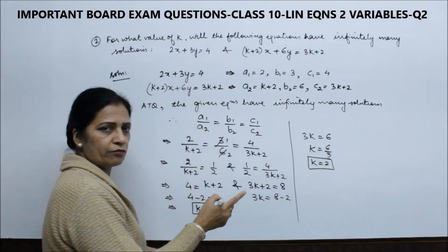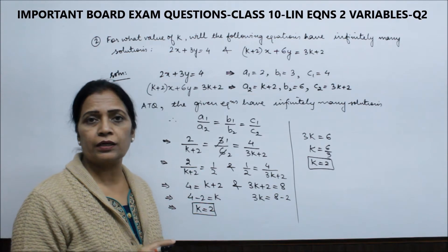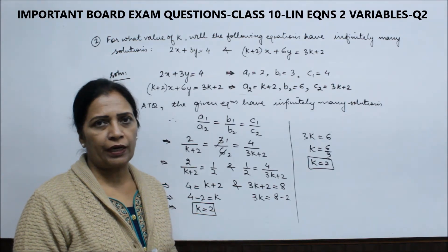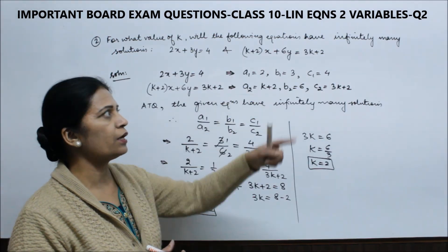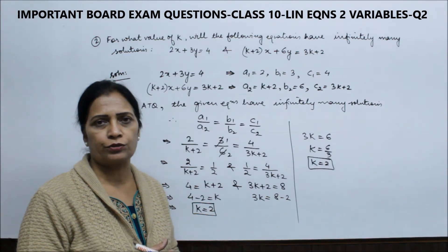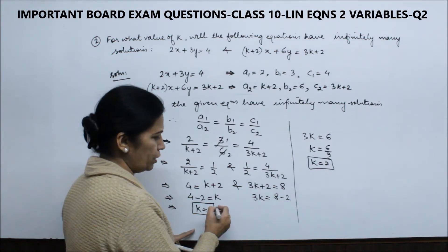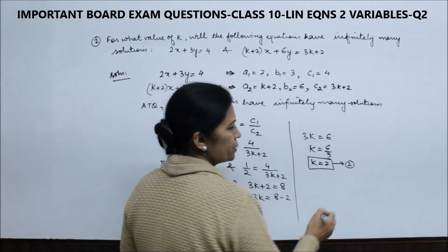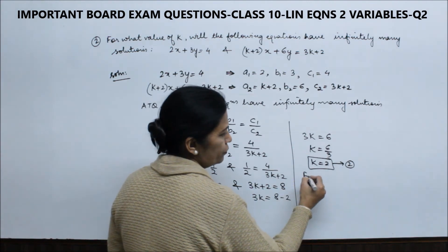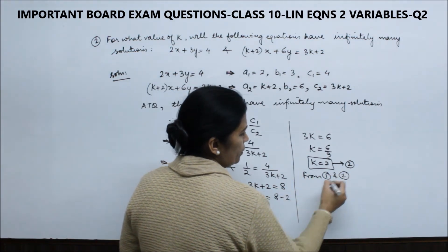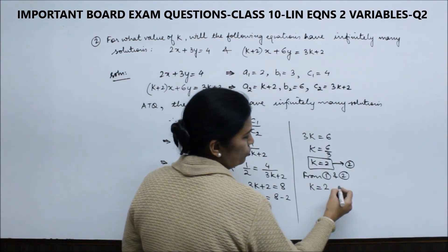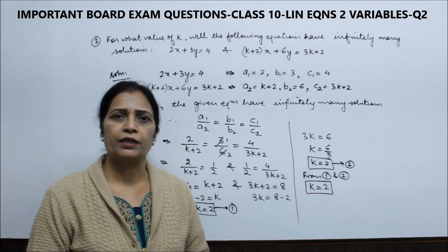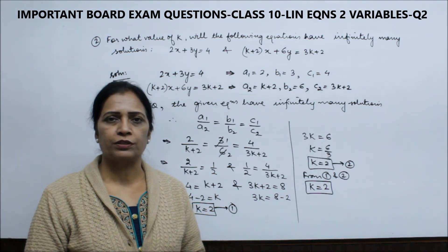So we see both calculations give the same value of k. If different values came, we would write that no value of k can make the equations have infinitely many solutions. But in this case, from both the first and second ratios, we got the same answer. We conclude: from first and second, k = 2. This value of k will convert the given equations to have infinitely many solutions.